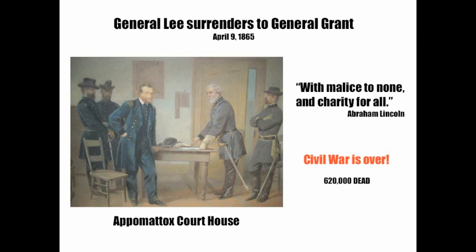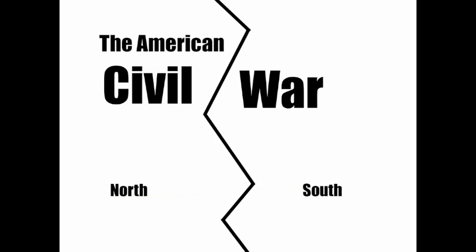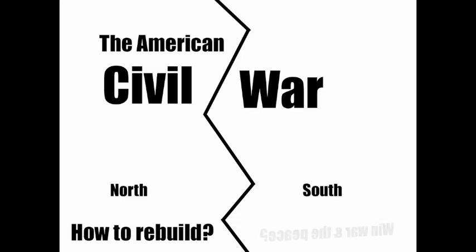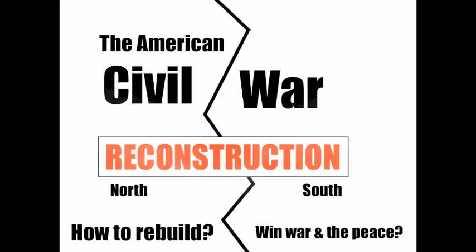The Civil War is over — 620,000 dead. The American Civil War between the North and the South. But how do we build? The South may have surrendered and the North may have won the war, but could they win the peace? This critical question has been called the Reconstruction. Many feel we are still reconstructing.